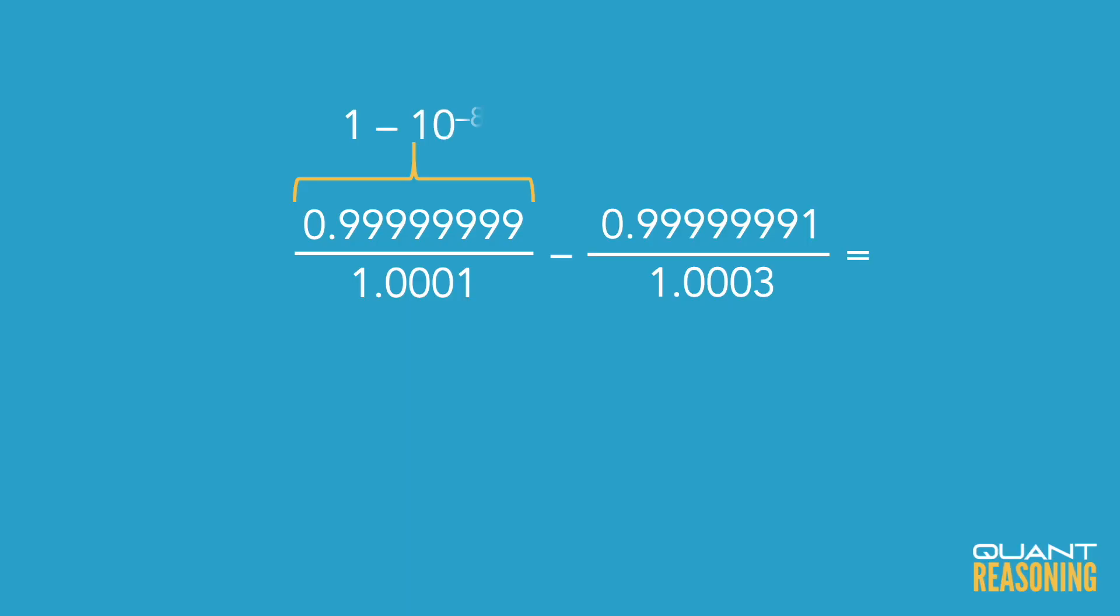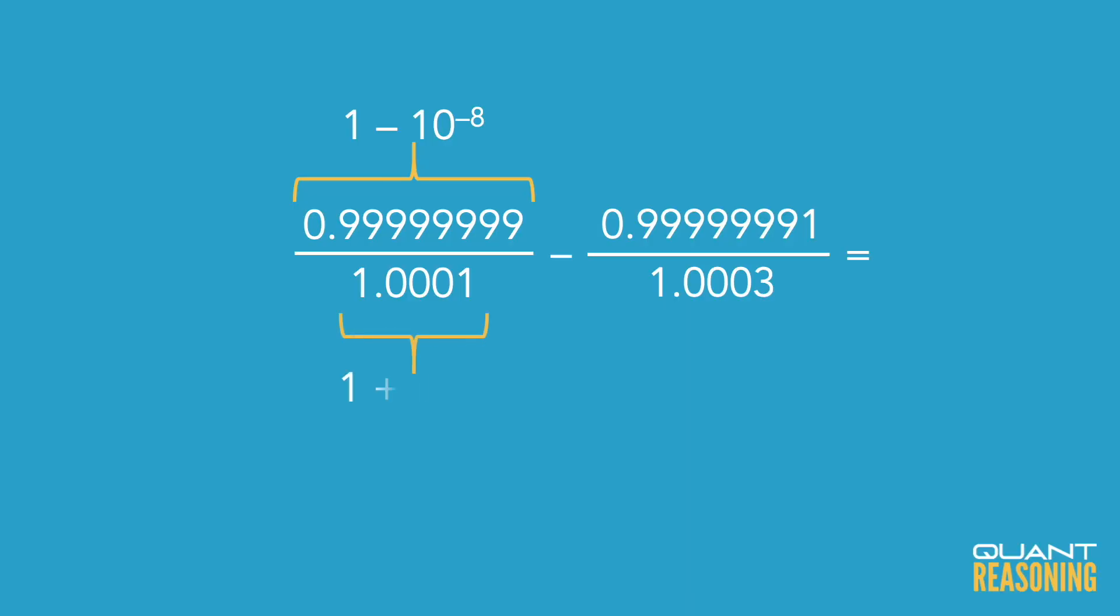So how far below 1 is that number? It would be 1 over 100 million, so 10 to the power of negative 8. So let's rephrase that numerator as 1 minus 10 to the power of negative 8, and similarly we'll rephrase the denominator for that first term as 1 plus 10 to the power of negative 4.